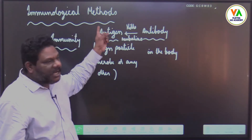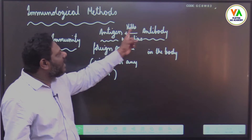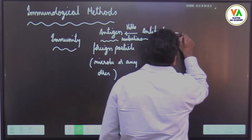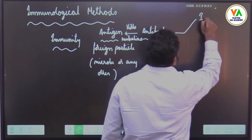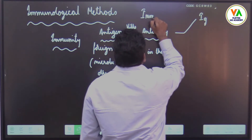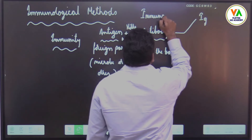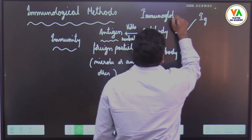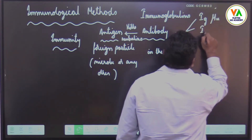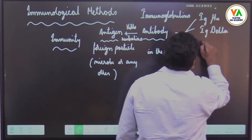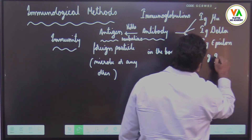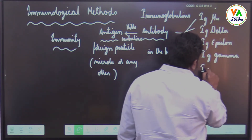In immunological methods, we are trying to detect antigen or antibody. These antibodies are of different types, also known as immunoglobulins. They can be immunoglobulin mu, immunoglobulin delta, immunoglobulin epsilon, immunoglobulin gamma, or immunoglobulin alpha.